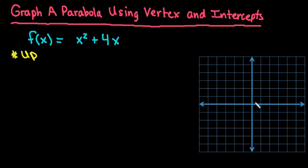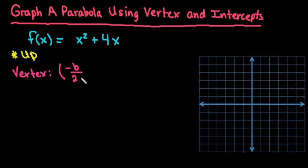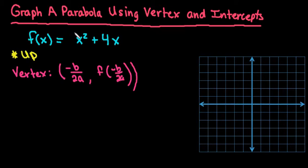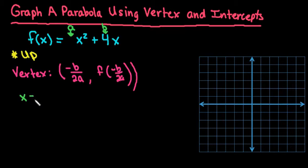Since the parabola opens up, to find the vertex, recall that the vertex is always at the coordinate negative b divided by 2a, comma f of negative b divided by 2a. If your equation is in standard form — ax squared plus bx plus c — a is the number in front of x squared and b is the number in front of x. To find the x-coordinate of the vertex, I do negative 4 divided by 2 times 1, which gives me negative 2.